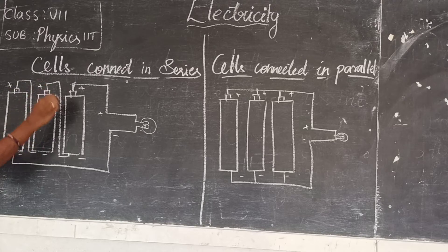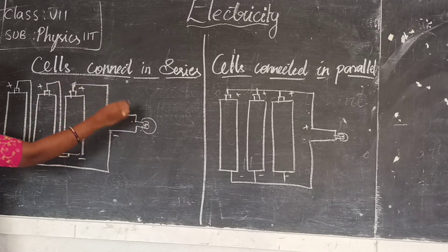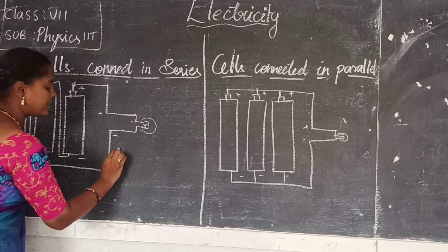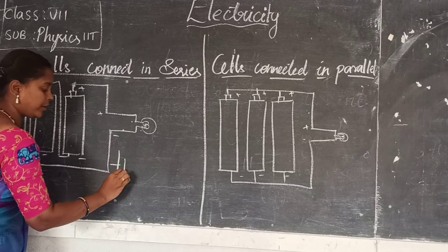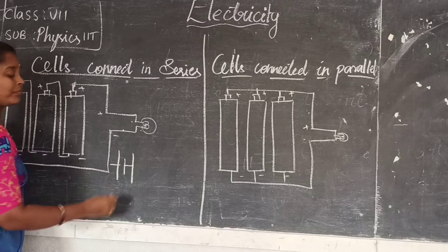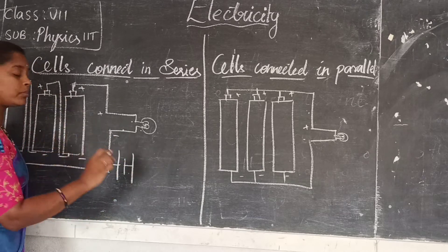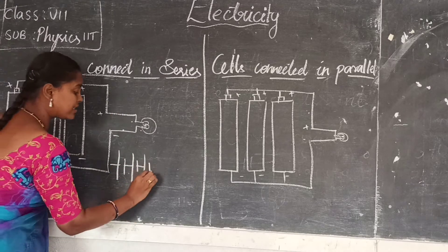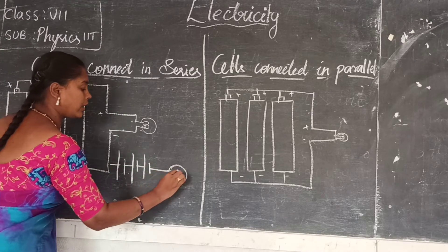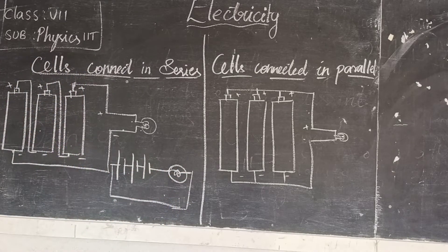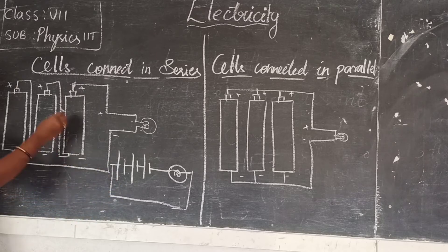Positive to negative, positive to negative, and positive to the bulb, negative to the bulb. In the symbolic diagram, the positive and negative of the 1st cell is connected to the 2nd cell's positive terminal, the 2nd cell's negative terminal is connected to the 3rd cell's positive terminal, and the last negative is connected to the bulb. This is the diagram where cells are connected in series.